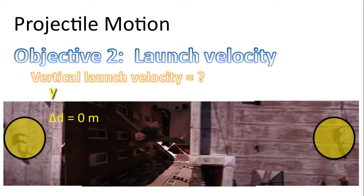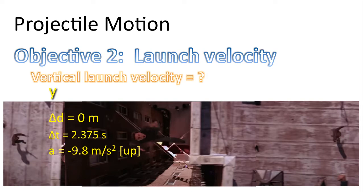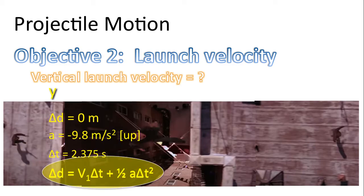In other words, his starting position in the y direction and his end position in the y direction are the same. We know the time of flight is 2.375 seconds, and we know the acceleration is negative 9.8 meters per second per second. So here's an equation we can use to solve for the initial velocity in the y direction. Please pause the video now and try it out.